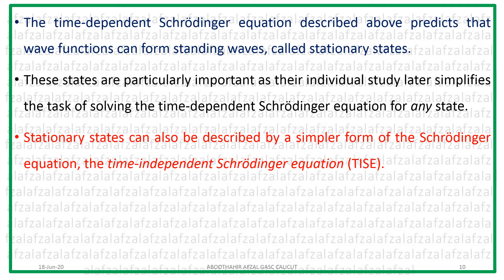The time-dependent Schrödinger equation predicts that the wave function can form standing waves called stationary states. Standing waves have constant amplitude with nodes and antinodes — similar to waves created by sound or on a rigid string, where incident and reflected waves superpose to form stationary waves. Similarly, the time-dependent Schrödinger equation predicts wave functions whose probabilities remain constant at different points, producing stationary states that simplify the task of solving the time-dependent equation.